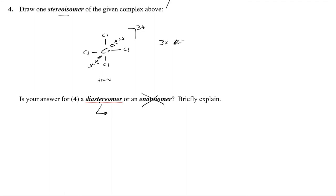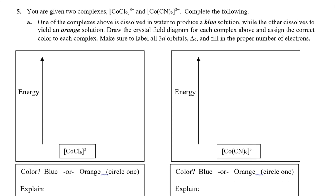Moving on to crystal field theory. We're given two complexes: hexachlorocobaltate(3−) and hexacyanocobaltate(3−). Note that since these are anionic complexes, we add the '-ate' ending to the metal name. Both complexes are dissolved in water — one makes a blue solution, the other an orange solution. We need to draw the crystal field diagram, label all d orbitals, show delta, and give the number of electrons.